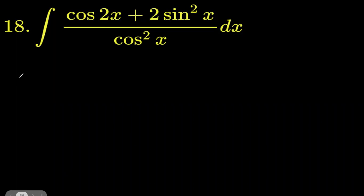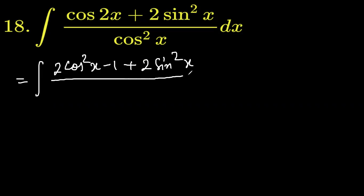In this form the question would look like: integration of cos 2x means 2 cos square x minus 1 plus 2 sine square x, and yes it looks like we have done it, divided by cos square x dx.